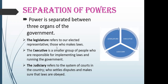The legislature refers to our elected representatives — those who make laws. This includes members of Parliament, members of the Legislative Assembly, and the Prime Minister. The executive is a smaller group of people responsible for implementing laws and running the government. For example, IPS officers, IAS officers, and the Election Commissioner are executives — people responsible for implementing laws made by the legislature.